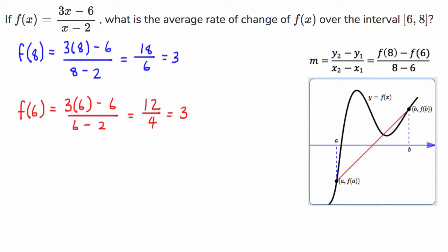So we've found the y values at the endpoints of this domain, 6 to 8, and now we're going to insert them into our gradient calculator. So our rate of change, or m, is equal to 3 minus 3 over 8 minus 6. This equals 0 over 2, which is effectively 0.